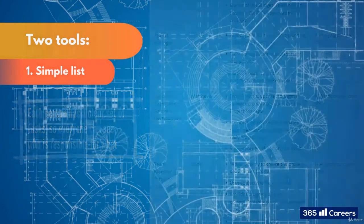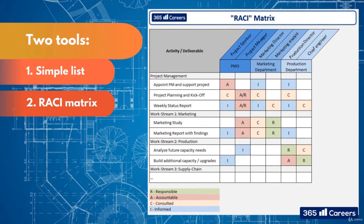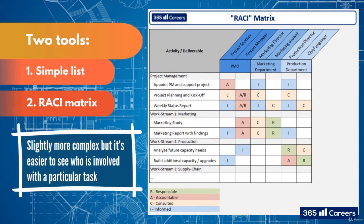The second tool is called an RACI matrix. It is slightly more complex, but it's easier to see who is involved with a particular task.